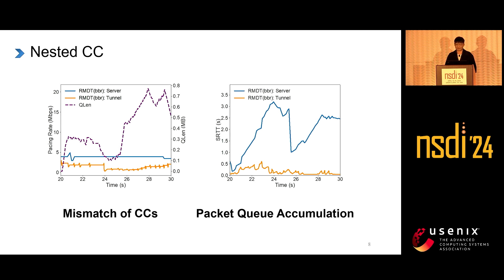This may be due to nested congestion control. When the tunnel uses congestion control, there will be two congestion controls: the congestion control of the tunnel connection and the congestion control of the end-to-end connection. We printed the pacing rate of these two connections and the queue length of the tunnel connection in the left figure. We observed that at 24 seconds, the tunnel connection (orange line) perceives a bandwidth decrease, while the end-to-end connection (blue line) does not. This mismatch causes a large accumulation of packet queue in the tunnel (purple line), leading to a very large SRTT of the end-to-end connection, as seen in the right figure.